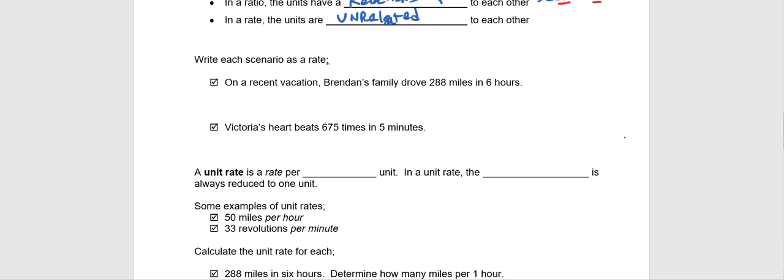So some quick practice. I'm going to do one example down here and leave you to do the other. If we have a scenario written out, such as on a recent vacation Brendan's family drove 288 miles in six hours, we want to write that as a rate. So what we can do is say 288 miles, and we can abbreviate it or write the word out, per six hours. That is our rate.